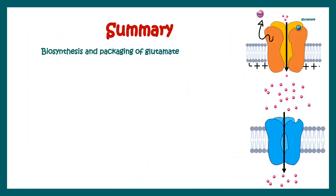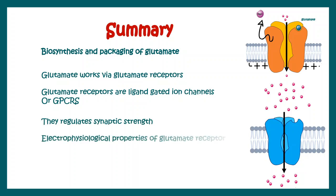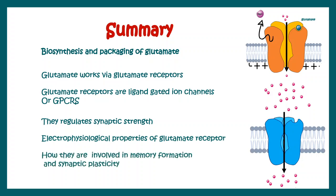As a summary: we have looked at biosynthesis and packaging of glutamate into synaptic vesicles. We looked at how glutamate works and how glutamate receptors work in the postsynapse. We looked at the electrophysiological properties of the glutamate receptors and how they regulate synaptic strength, comparing their IV and GV plots. And lastly, we looked at how NMDA receptors are involved in memory formation and synaptic plasticity. If you want a detailed explanation of long-term potentiation and synaptic plasticity, all of these are linked in the I button.